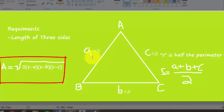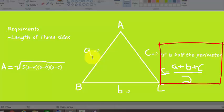As you can see, this is the formula: area equals the square root of s times (s minus a) times (s minus b) times (s minus c), where s is half the perimeter. In order to calculate s, we add the three sides and then divide by 2.